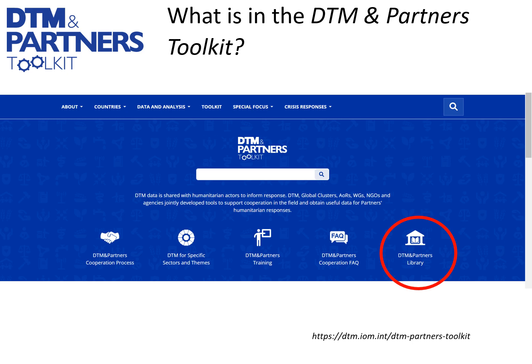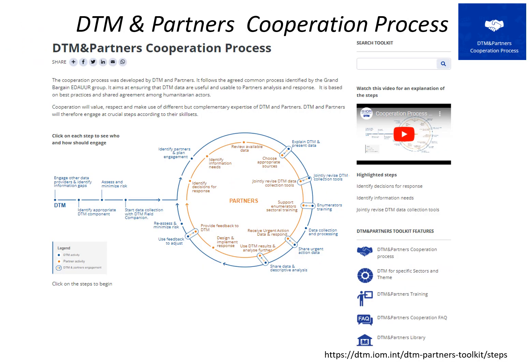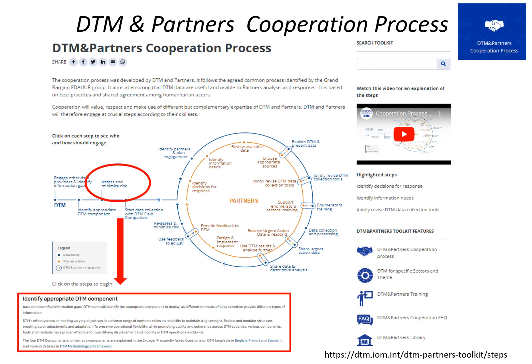You can click on the DTM & Partners library to access all tools organized in folders and subfolders. If you click on the cooperation process, you will access the explanation of the DTM & Partners cooperation steps. The process was developed for DTM & Partners cooperation specifically, but follows the best practices of most actors in the humanitarian sector and outcomes of the Grand Bargain workstream for needs assessments. Clicking on each step will lead to an explanation of that step and the tools to use during it. Clicking on the video will open a narrated explanation of the process.